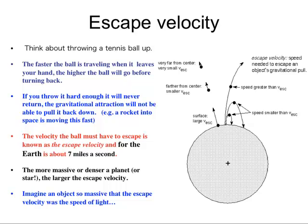That's what rockets do. With a space shuttle launch, the idea is to get it going fast enough to escape Earth's gravitational tug and begin orbiting at a larger distance. If it went even faster, it would escape Earth altogether and just keep going. For Earth, the escape velocity is about 7 miles a second — you have to be traveling at something like 7 miles a second in order to escape.